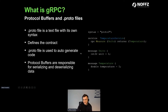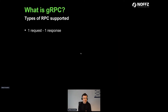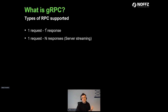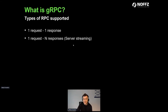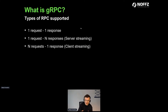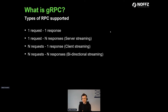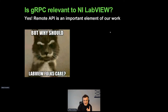gRPC supports four types of RPC. The simplest is unary: one request, one response. Then server streaming: one request and multiple responses — the server streams data continuously in real time. Client streaming is also supported, useful when LabVIEW needs to push data to an instrument. Finally, there's bidirectional streaming — all supported by gRPC.